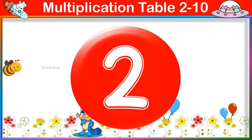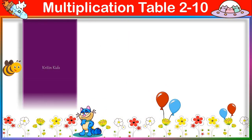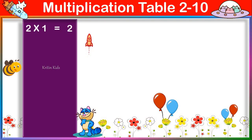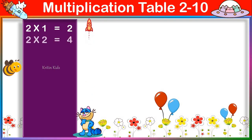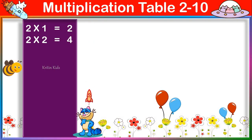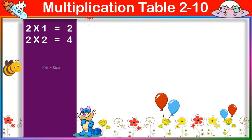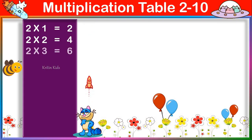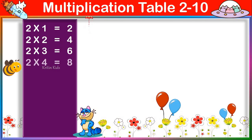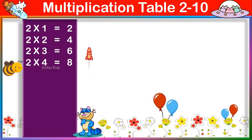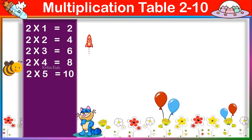Multiplication Table of 2. 2 one's are 2, 2 two's are 4, 2 three's are 6, 2 four's are 8, 2 five's are 10.